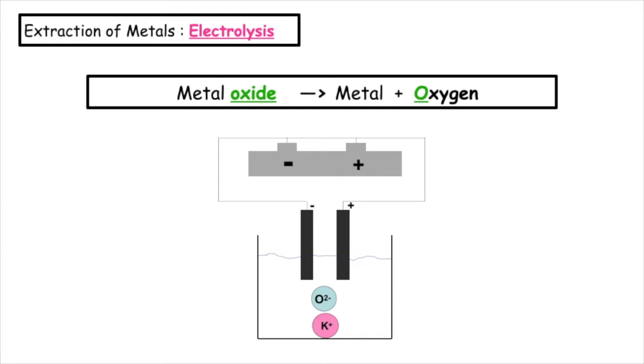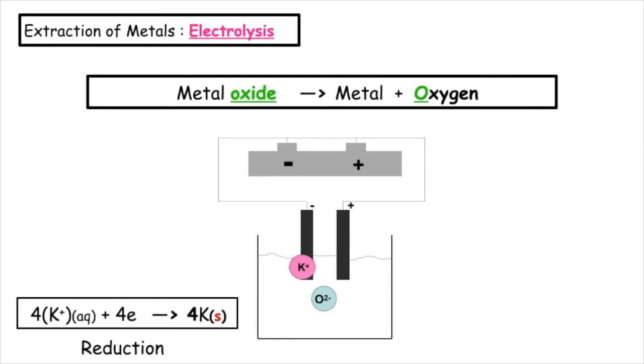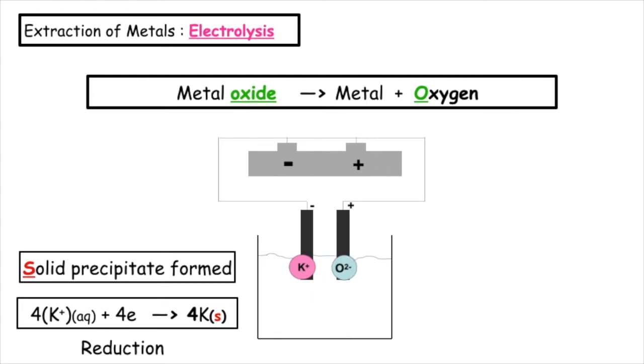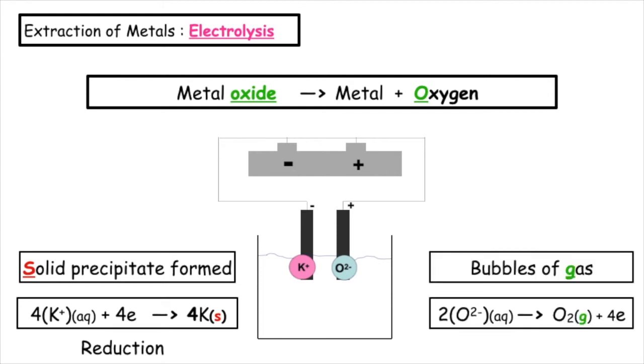The positive ion is attracted to the negative electrode, and the chemical equation happening there is known as reduction. What we will see in the experiment is a solid precipitate being formed. The oxygen ion, which is negatively charged, is attracted to the positive electrode. What we will see there is bubbles of gas being produced, and the name of that chemical process is oxidation.